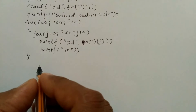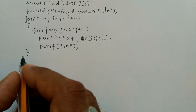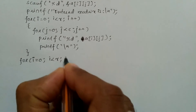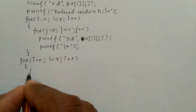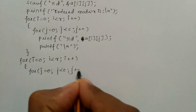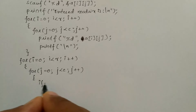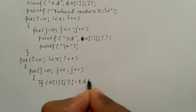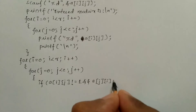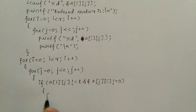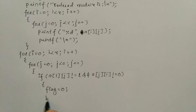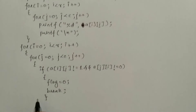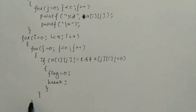Now we are going to go for the actual logic. We have to identify whether the entered elements of the matrix form an identity matrix or not. For that, again we are going to use the same for loop: for i is equal to zero, i is less than row, i plus plus, curly open brace. Next, inner for loop j is equal to zero, j is less than column, j plus plus, curly open brace. Now we are going to check the condition: if a of i j is not equal to one AND a of j i is not equal to zero, then the flag variable should be set to zero and the break statement brings the control out of the looping construct. Then we write the corresponding closing braces for both loops.